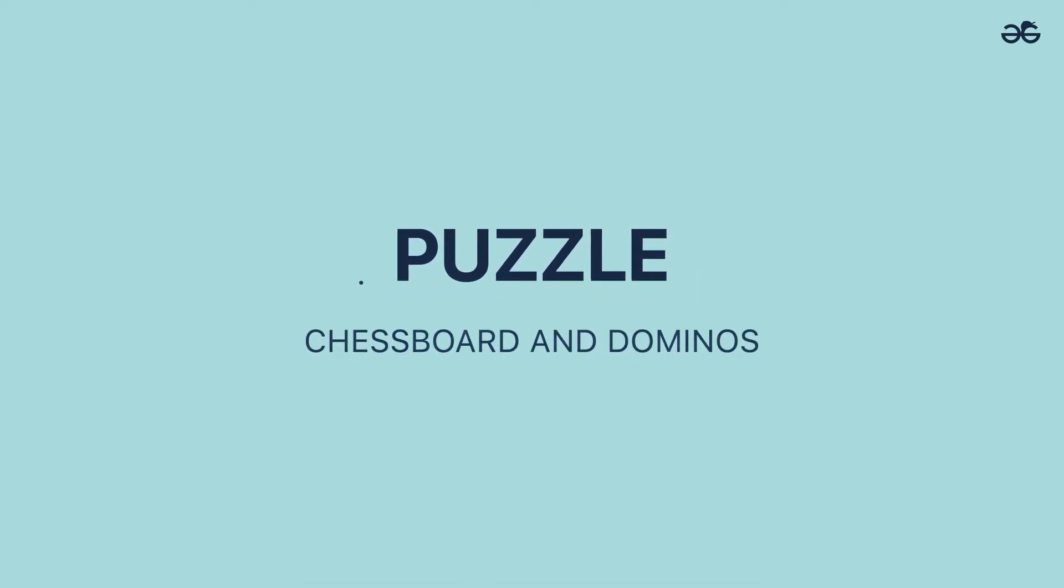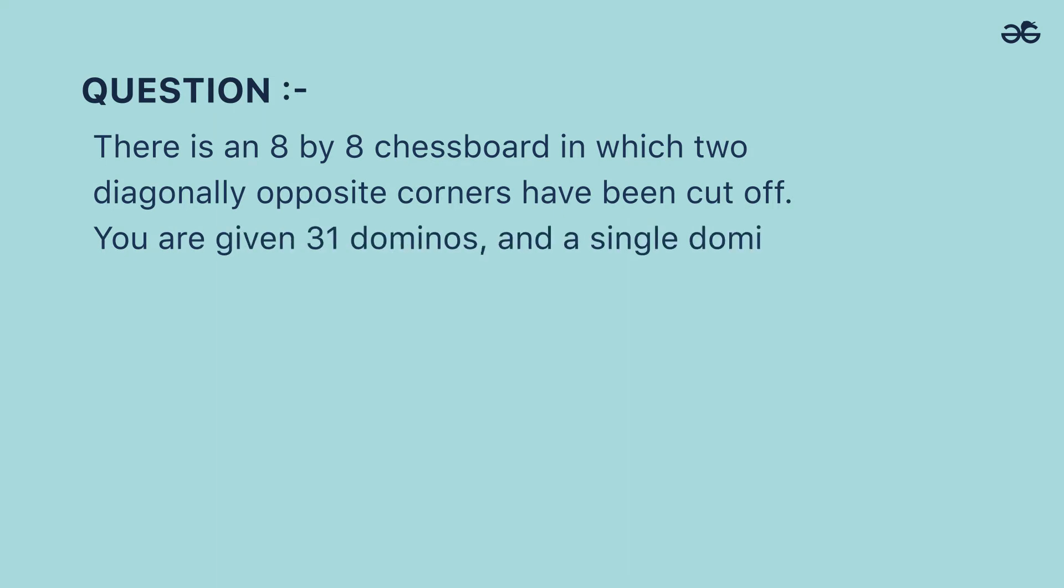Puzzle: Chessboard and Dominoes. Question: There is an 8x8 chessboard in which two diagonally opposite corners have been cut off.